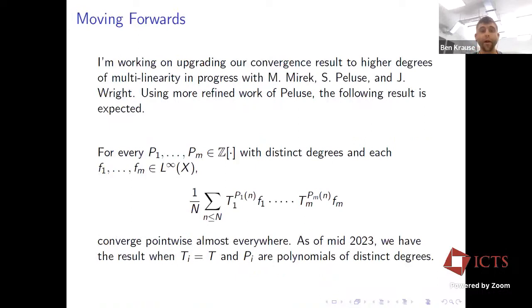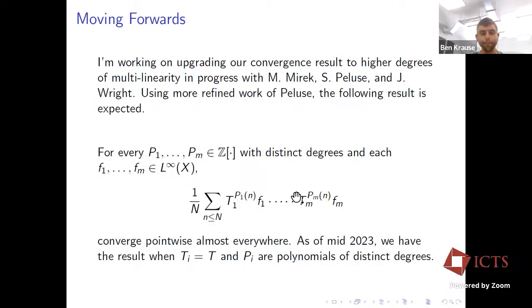I'm working on upgrading this work to higher degrees of multilinearity. We expect to handle commuting shifts involving polynomials of distinct degrees: given M commuting transformations and M polynomials with distinct degrees forming M-fold multilinear averages, we'd like to show these converge almost everywhere. I just learned from Jim that we can handle the case of a single transformation — the sticking point was p-adic analysis. We had the case where the P_i were distinct monomials earlier this year, but passing from distinct monomials to the full distinct-degree setting required heavy-duty p-adic analysis.